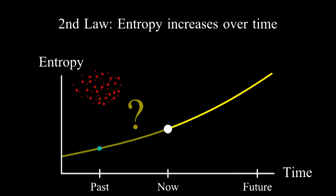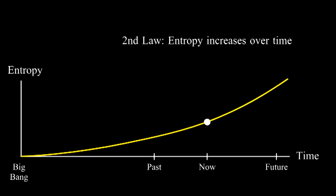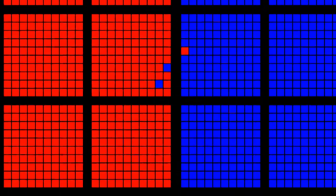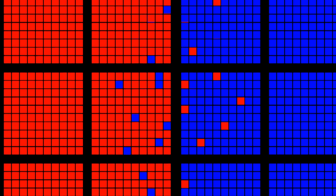This argument works in one direction. It explains why entropy should increase in the future, but it does not explain why entropy was lower in the past. The only explanation for the second law is that the universe must have begun with extremely low entropy. When the universe began, it was extremely, inconceivably well organized. And ever since then, it has gradually become more and more disorganized and random. Why did the universe start this way? I don't think we have a good explanation.